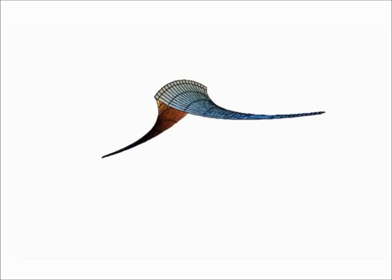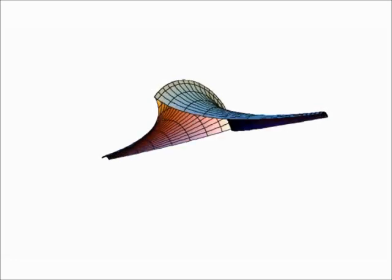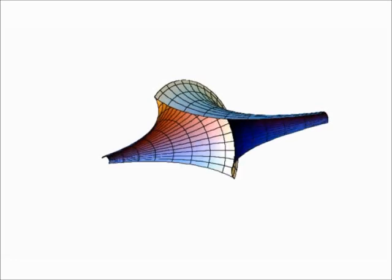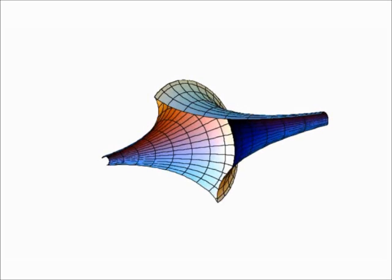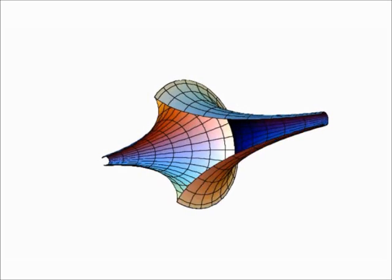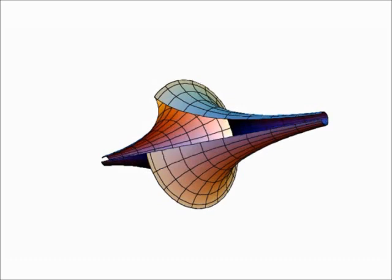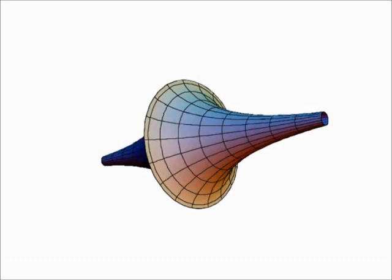One reason the Tractrix is so interesting is that it generates a special surface. If we spin the Tractrix around the axis, we get the following shape. This is called the Pseudosphere, a name coined by mathematician Eugenio Beltrami in 1868 when he used the surface as a foundation for hyperbolic geometry, which is used to study the shape of the universe.